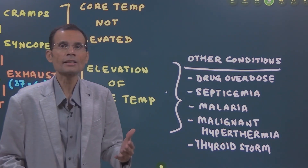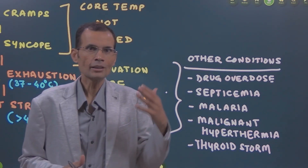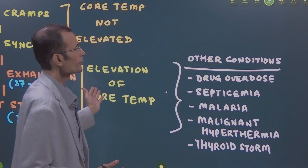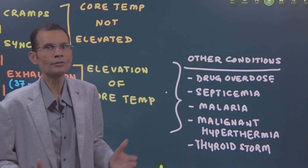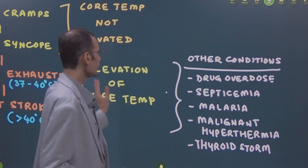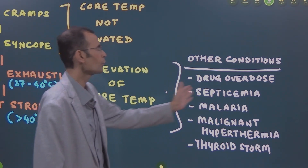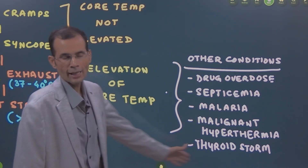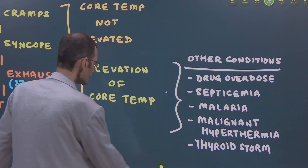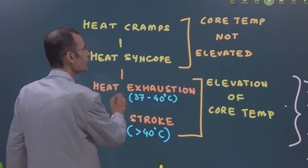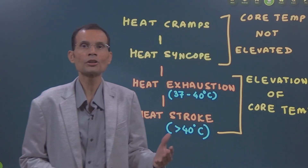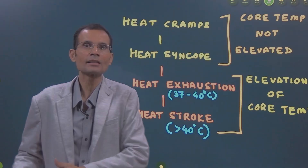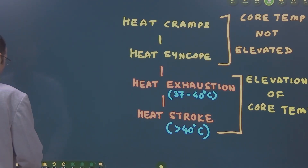If the core temperature is elevated, it may be because of exposure to excessive heat or heat generation in the body. However, other conditions must also be kept in mind that may lead to increased core temperature, such as drug overdose, septicemia, malaria, malignant hyperthermia, or thyroid storm. We are now interested in the conditions where exposure to excessive heat overwhelms the heat loss mechanisms in the body, causing these heat related illnesses.